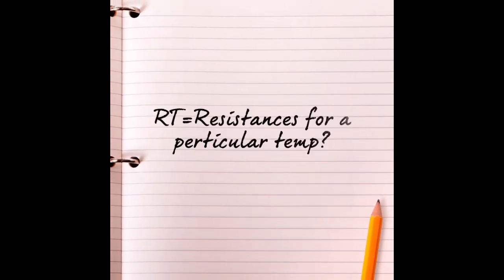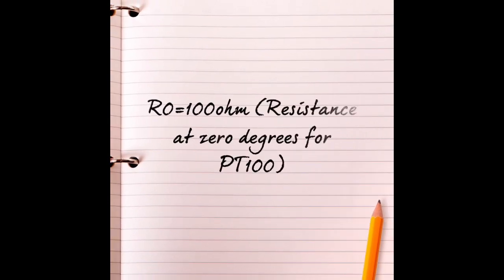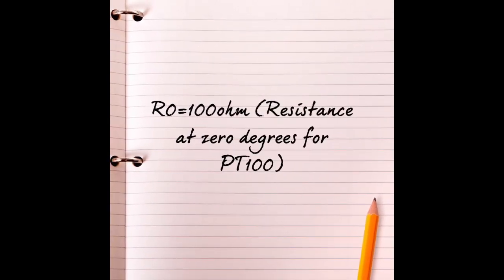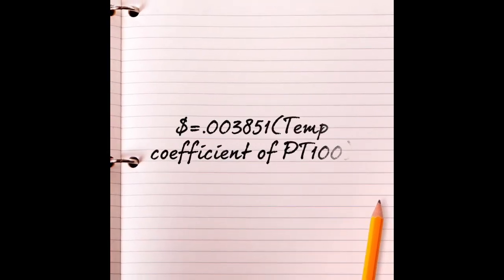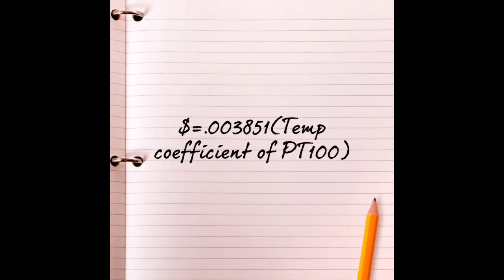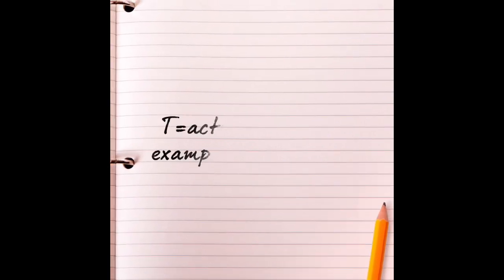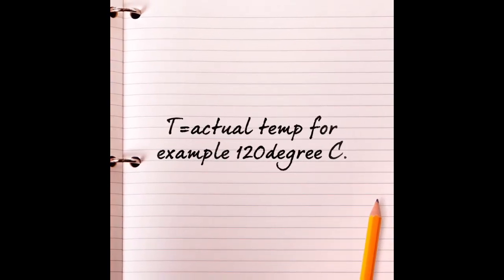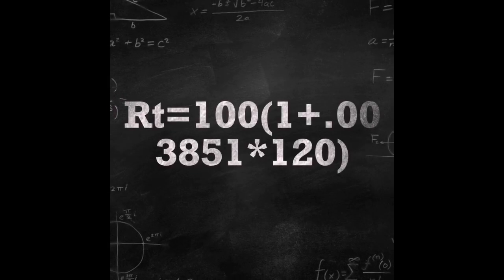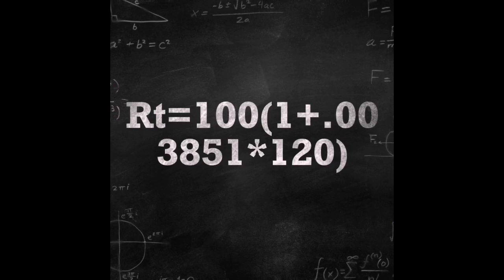Where RT is resistance for a particular temperature, R0 is resistance at 0 degrees Celsius (100 ohms), alpha is 0.003851 (temperature coefficient of PT100), and T is actual temperature. We are going to use 120 degrees for this example.